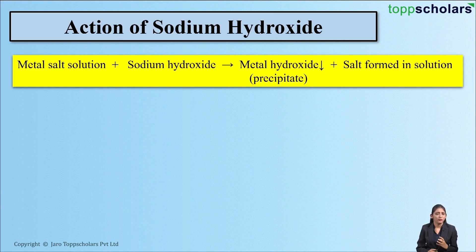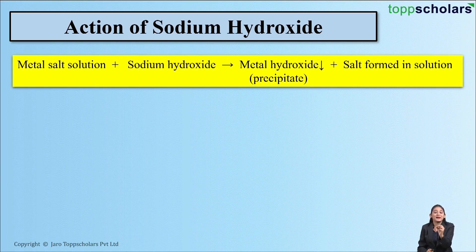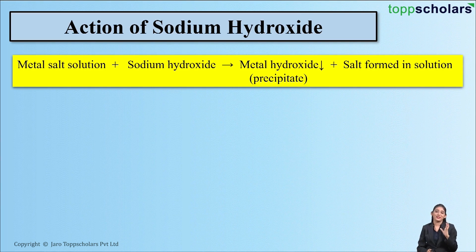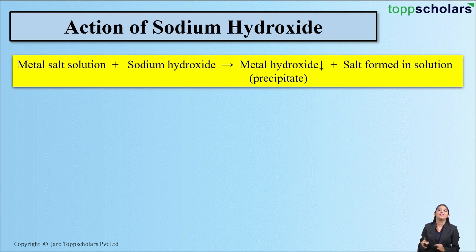Here we have a general reaction. When sodium hydroxide solution is added to a metallic salt solution, it results in the precipitation of metal hydroxide — the downward arrow indicates that a precipitate is formed. Along with this, we get a salt which is formed in the solution.